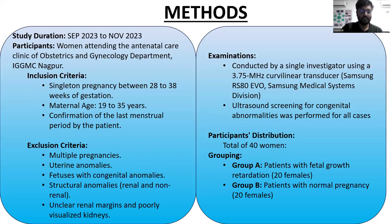This cross-sectional study took place during September to November 2023, with women attending the ANC clinic of the OBG department. We included singleton pregnancies between 20 to 38 weeks of gestation, with maternal age between 19 to 35 years, with confirmation of LMP by the patient. Exclusion criteria included multiple pregnancies, uterine anomalies, and fetuses with congenital anomalies such as unclear renal margins.